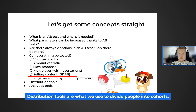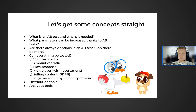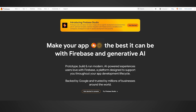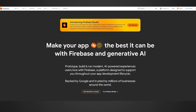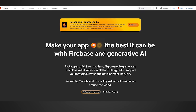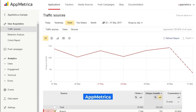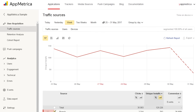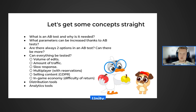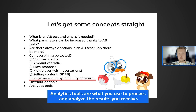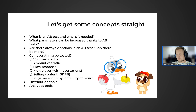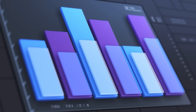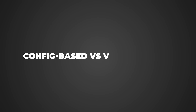Distribution tools are what we use to divide people into cohorts. First and foremost, I always use Firebase — it's free and a powerful tool from Google, closely integrated with Google Play but also works with iOS. You could also use Appmetrica, another powerful tool with a wide range of functionalities, though somewhat more limited. There's also a similar tool built into Unity, though I only know of its existence. Analytics tools for processing results are also seamlessly built into Firebase, completely free, with comprehensive analysis across a wide range of parameters.